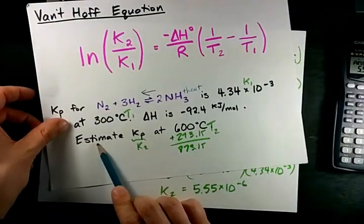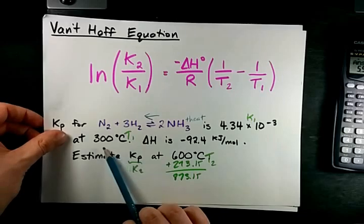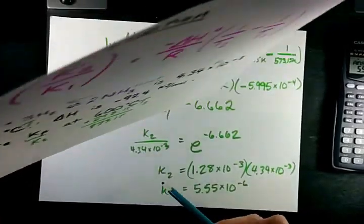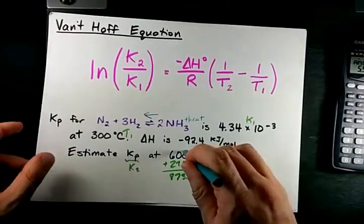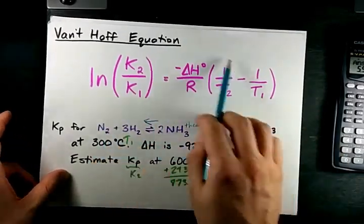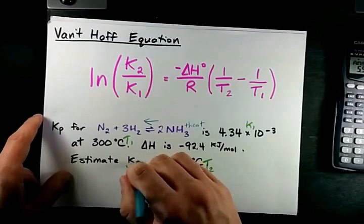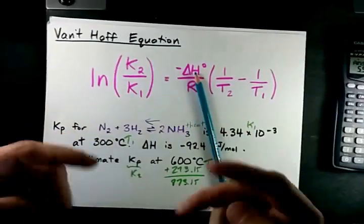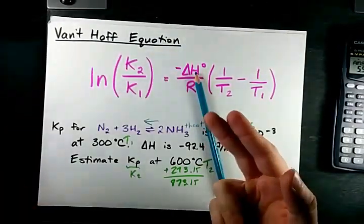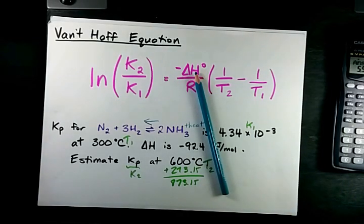Now again, this is an estimate. I'm pretty sure that the Kp for this reaction at 600 is proven to be some other amount. But for the most part, the Van't Hoff equation is a great way to estimate the Keq at a new temperature. Thanks for paying attention. Thanks for sticking with me. And best of luck to you.